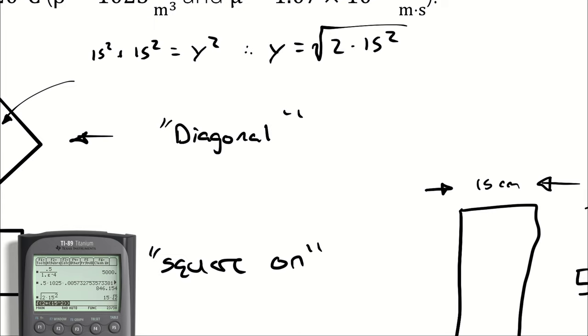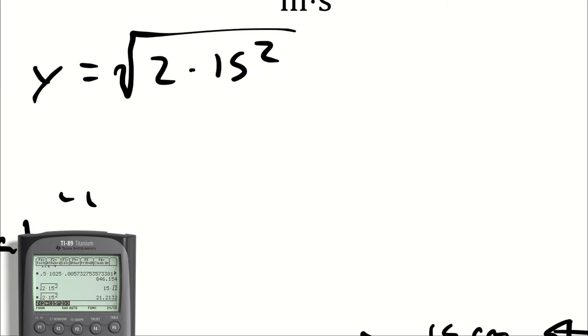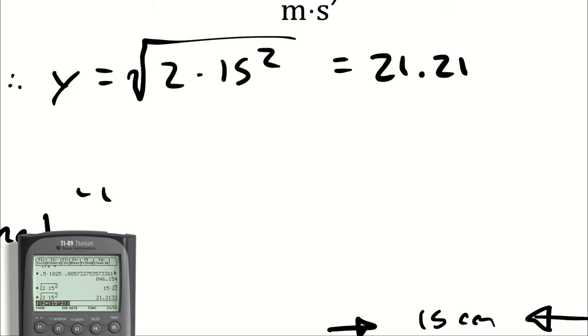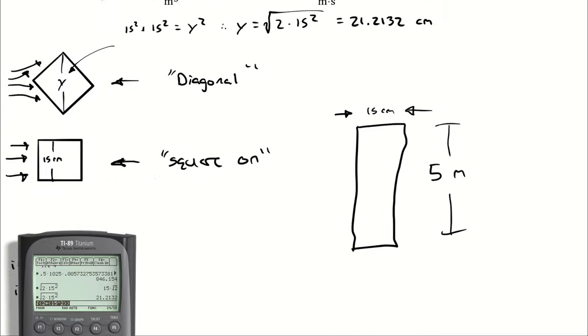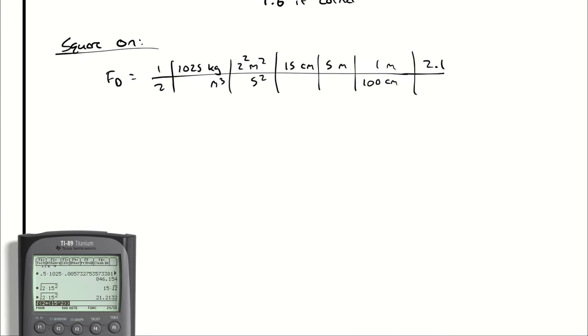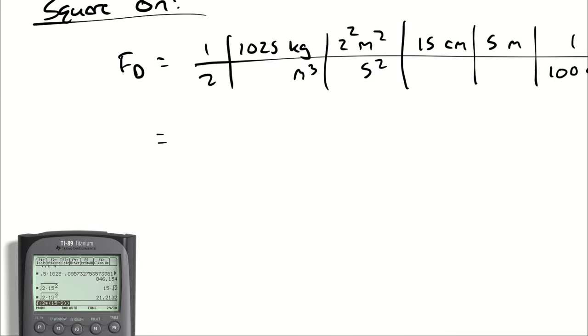And we get 15 times the square root of 2. Thank you, calculator. 21.2132, and that's a number of centimeters. Anyway, a little bit of a tangent there.